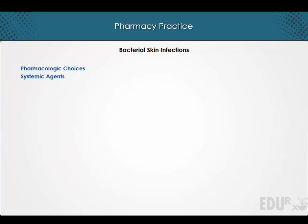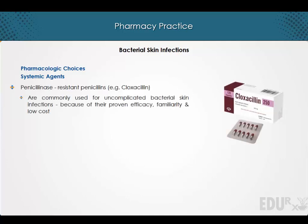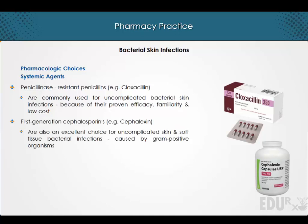Pharmacologic Choices — Systemic Agents. Penicillinase-resistant penicillins are commonly used for uncomplicated bacterial skin infections because of their proven efficacy, familiarity, and low cost. The first-generation cephalosporins are also an excellent choice for uncomplicated skin and soft tissue bacterial infections caused by gram-positive organisms.